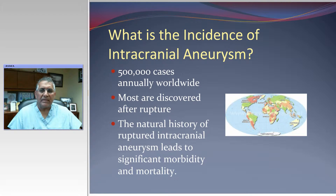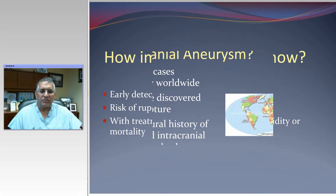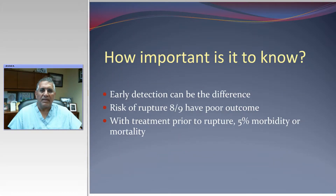Overall, there are about 500 cases of new aneurysms every year. Most are discovered after rupture. The natural history of ruptured intracranial aneurysm leads to significant morbidity and mortality. The common calculation is that one-third of people will die at home, another third will get to the hospital and still die or have significant morbidity, and only one-third survive. And out of that one-third that survive, only one-third — which is one-ninth of the original group — will be back to normal within six months.